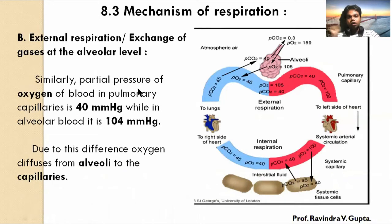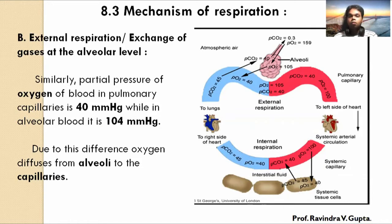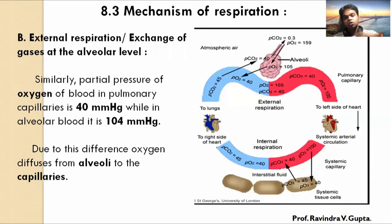Now, what happens with O2? O2 is utilized in our body through cellular respiration. The formula is: C6H12O6 (glucose) + 6O2 → 6CO2 + 12H2O. This means O2 is utilized and CO2 is produced. That is why CO2 levels are high in the blood and CO2 levels are low in the atmosphere. When blood enters the alveolus, CO2 will move into the alveolus.